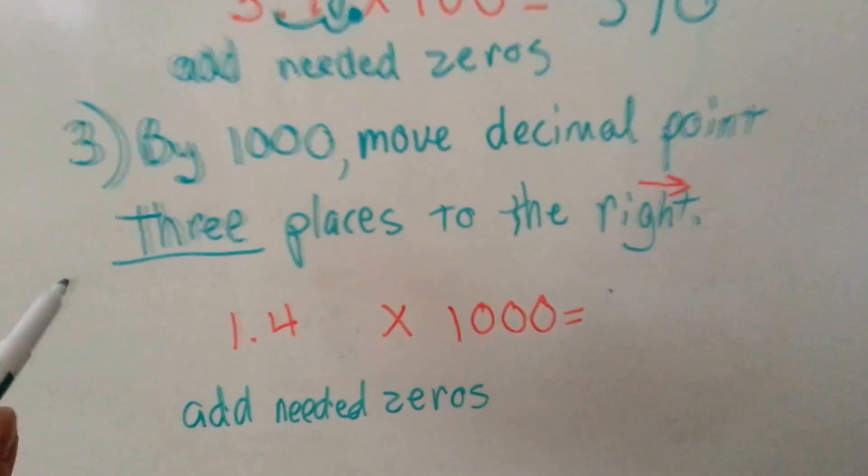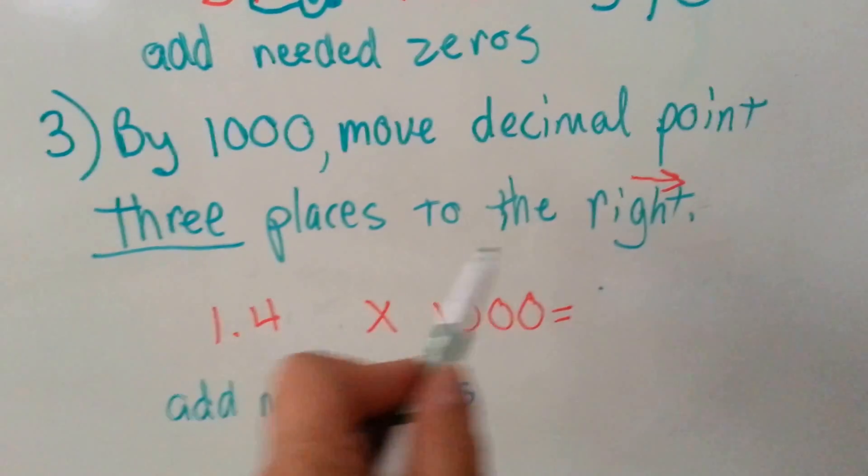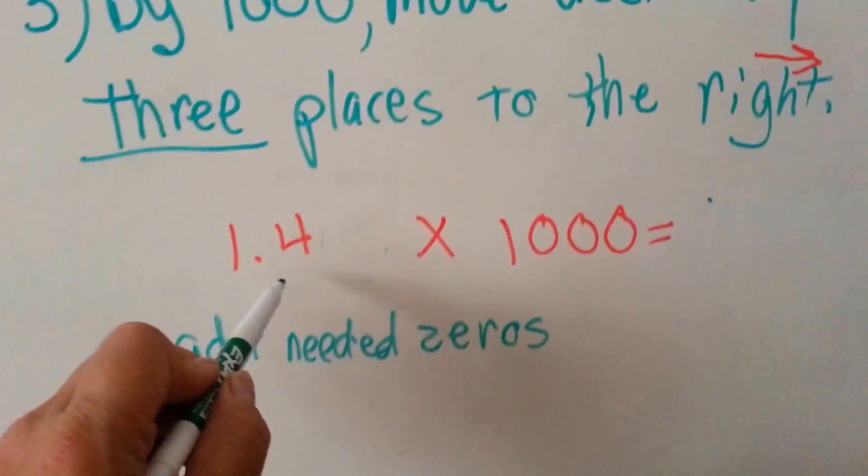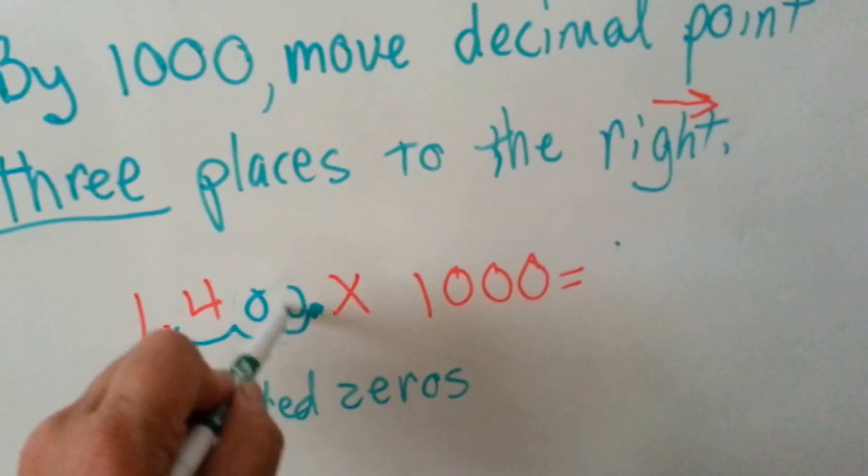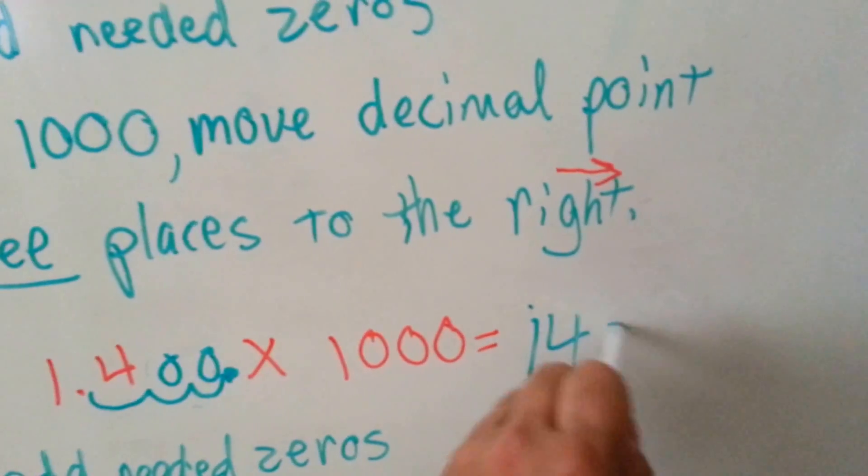If you're going to multiply by a thousand, you move the decimal point three places to the right, so 1.4 becomes one, two, three, put in our missing zeros, it becomes fourteen hundred.